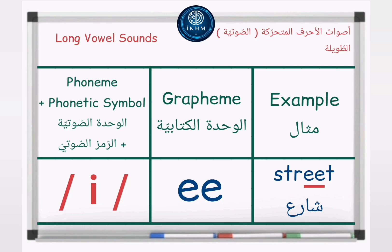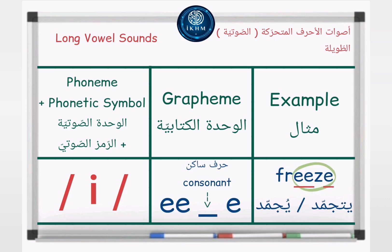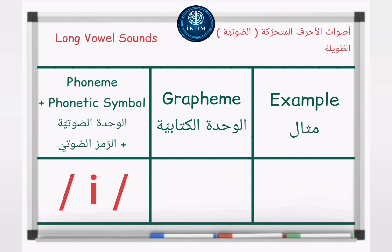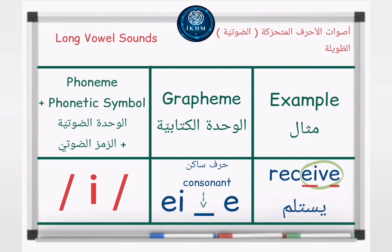Grapheme — letters EE, example: 'street' /iː/. Grapheme — EE consonant E, example: 'freeze' /iː/. Grapheme — letters EI, example: 'protein' /iː/. Grapheme — EI consonant E, example: 'receive' /iː/.